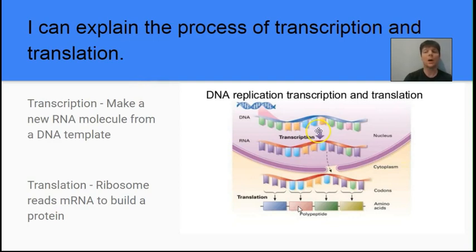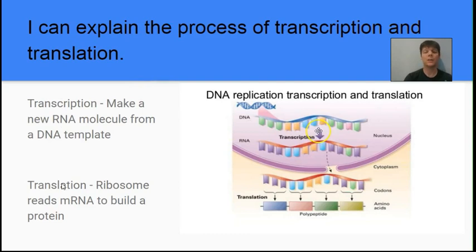This polypeptide is going to become a protein. To remember the order of these processes, I like to compare the two words: both start with T-R-A-N-S. The next letter in transcription is C, and in translation the next letter is L. Alphabetically, C comes before L, so this helps you remember that transcription is the process that occurs first, and translation occurs later.